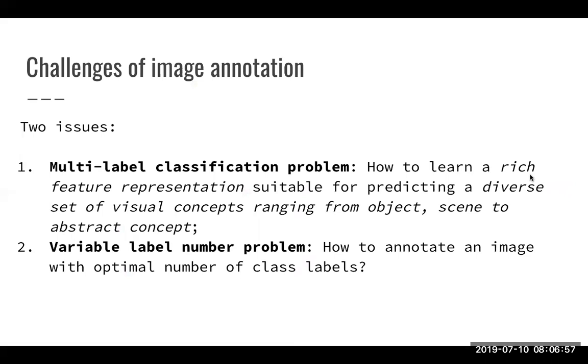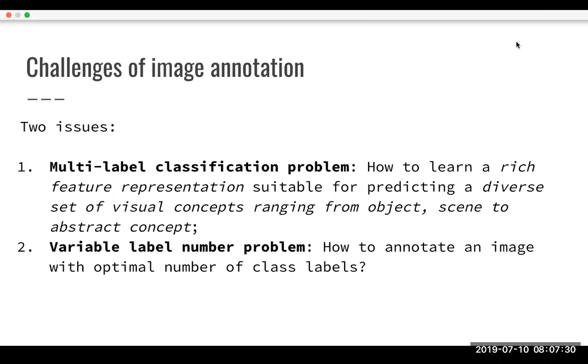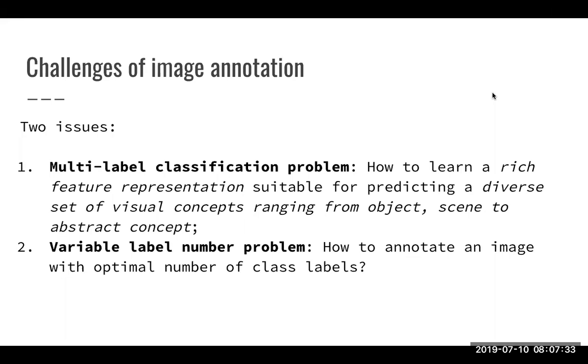And these differences cause too many issues when we are trying to do image annotation. The first one is that we need to assign multiple labels to one image and then the question is formally how to learn a rich feature representation suitable for predicting a diverse set of visual concepts ranging from object scene to abstract image concepts. So the question is how to find all these different kind of things in the image instead of just one thing. This is called the multi-label classification problem. The second question is how to annotate an image with the optimal number of class labels. How do we know if you should assign an image just one or maybe two or maybe even five labels? That's also an interesting problem and it's named the variable label number problem.